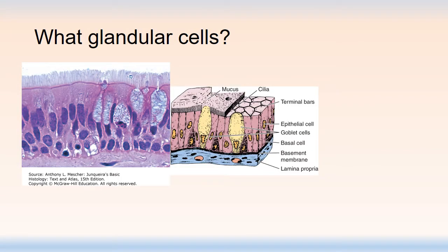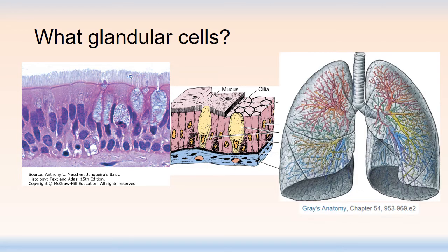What glandular cells are we talking about within the respiratory system? Lining the airways is our respiratory epithelium — pseudostratified columnar cells with cilia on top. We also have goblet cells that contain mucin. Those are glandular cells that line our airways. Further out in the lung parenchyma you have type 2 pneumocytes. Glandular epithelium is present pretty much throughout the lung, so adenocarcinomas can occur pretty much anywhere.